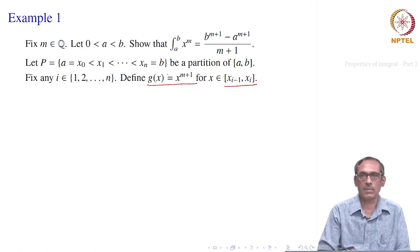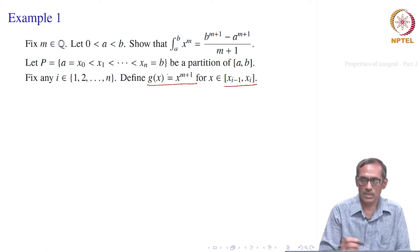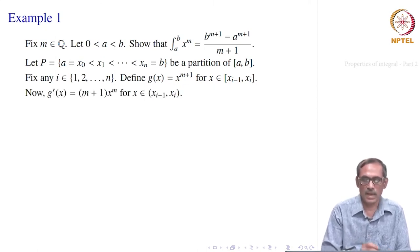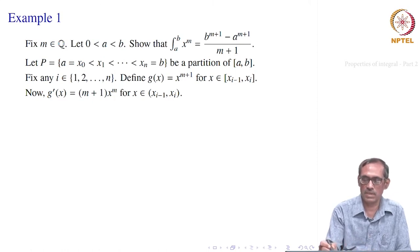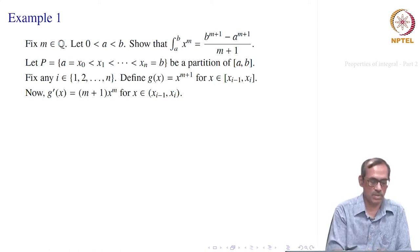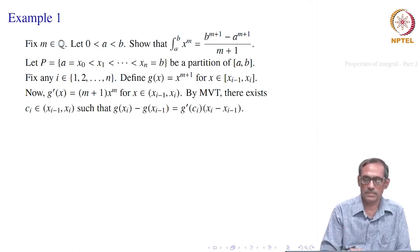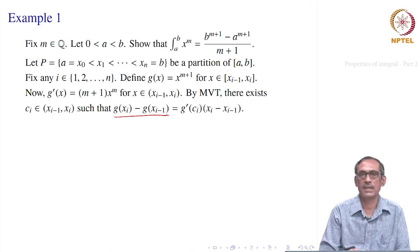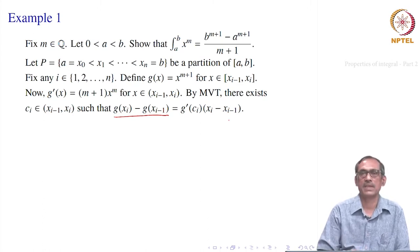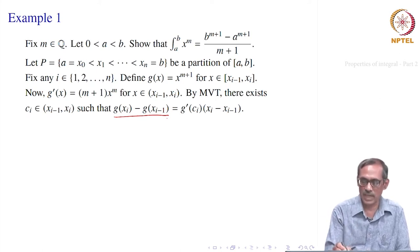We have done something similar in an earlier problem, when we found the integral of cosine x. Now let g(x) = x^(m+1) for x in [x_{i−1}, xᵢ]. Then g′(x) = (m+1)x^m, so g is differentiable over the open interval. We apply the Mean Value Theorem on g to get: g(xᵢ) − g(x_{i−1}) = g′(cᵢ) · (xᵢ − x_{i−1}), where cᵢ is some point between x_{i−1} and xᵢ.